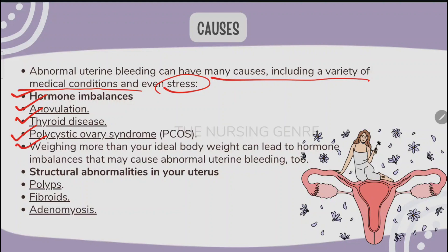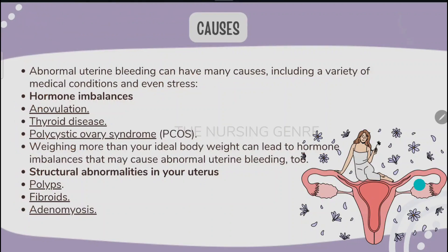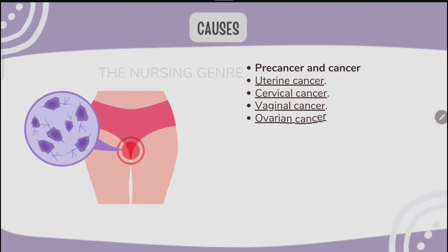Structural abnormalities in your uterus, such as a septate uterus, can cause abnormal uterine bleeding. Other structural causes include uterine polyps, fibroids, adenomyosis, skin tumors, and uterine tumors.